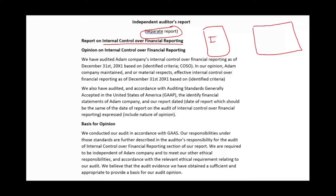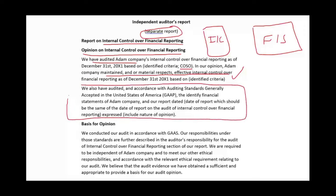Now for the external report — a separate report on internal control over financial reporting. We have audited Adam Company according to COSO and, in our opinion, the company maintained effective internal control — this is an unqualified or clean opinion. We cross-reference by noting we also audited the financial statements of Adam Company in accordance with generally accepted auditing standards in the U.S. We talk about how we conducted the audit, that we were independent, we followed ethical requirements, and we obtained sufficient and appropriate evidence as the basis for our opinion.